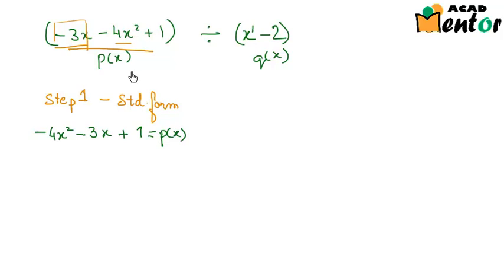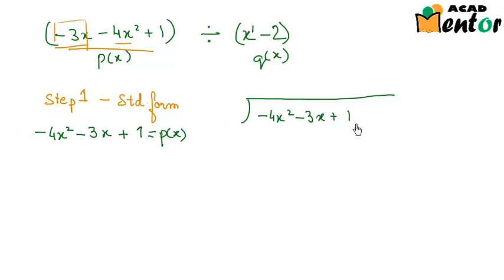Once both polynomials are in standard form, I draw the long division sign. The dividend, negative 4x squared minus 3x plus 1, goes under the sign, with terms arranged in decreasing powers of the variable from left to right. The divisor, x minus 2, is written to the left of the sign.